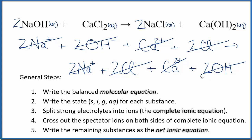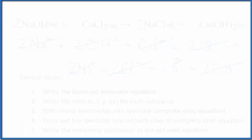So in answer to our question, writing the net ionic equation for sodium hydroxide and calcium chloride: there is no reaction because everything is soluble, and that means everything will be spectator ions. This is Dr. B with the net ionic equation for NaOH plus CaCl2 — except there's no reaction. Thanks for watching.